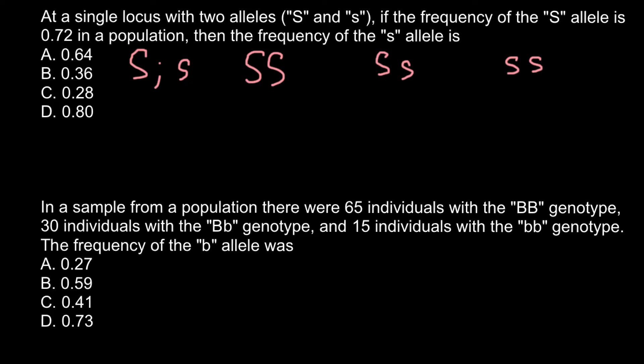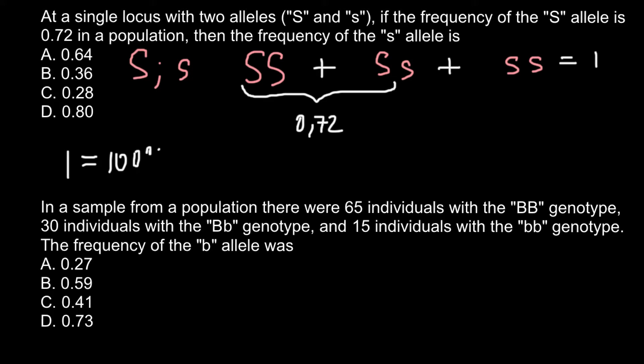So the dominant allele is present in the homozygous dominant genotype and also one copy is present in the heterozygous form. If this equals 0.72, I also want to tell you that when we add up all the frequencies of all three genotypes, they should equal to 1, which is the same as 100%.